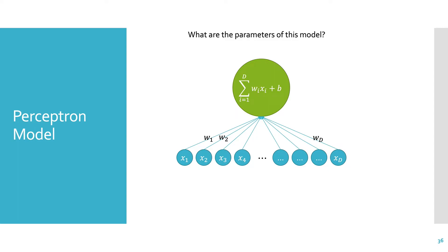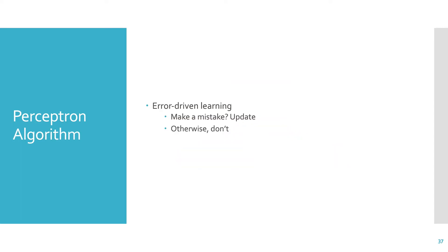The parameters of this model are the weights—and also the bias—because the parameters of a model are those that are learned as part of model training. We will use the training data to determine these weights and the bias. We learn the weights using error-driven learning. Think about this like studying for an exam with flashcards: you review all the flashcards once, and when you start getting some right you set those aside. You're constantly reviewing the ones you're getting wrong and ignoring the ones you got right. That's exactly how the perceptron algorithm works—you only update when you make a mistake.